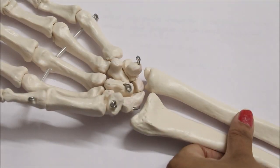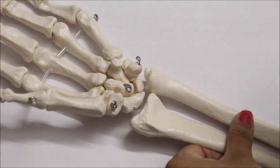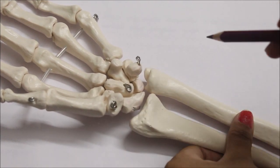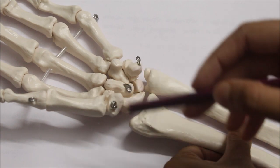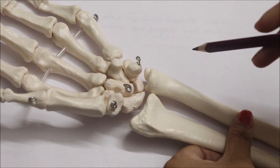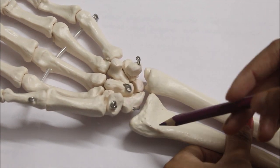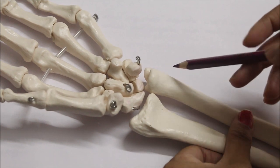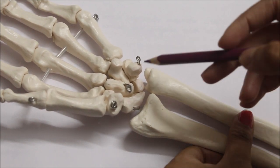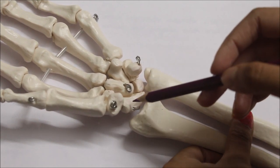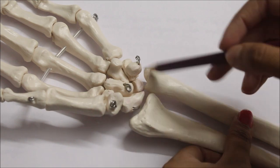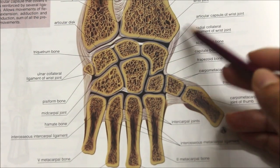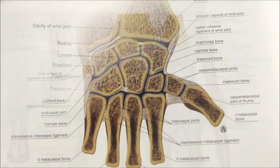Moving on to the ligaments of the wrist joint. Firstly, we have the articular capsule. The articular capsule surrounds the joint. It is attached above to the lower ends of the radius and the ulna, and attached below to the proximal row of the carpal bones.